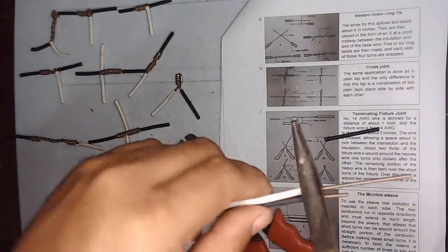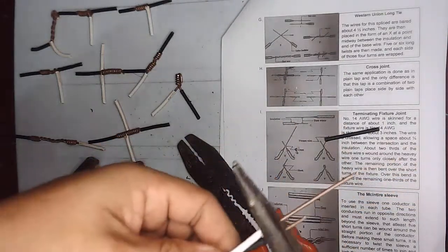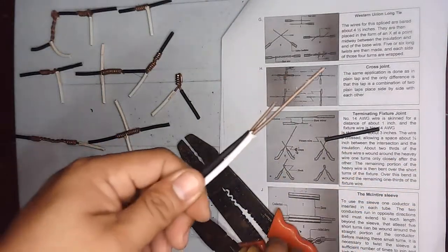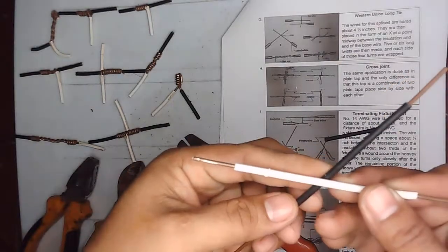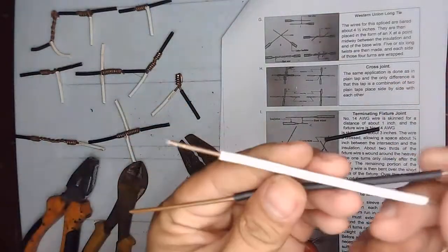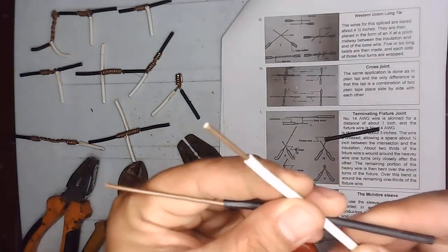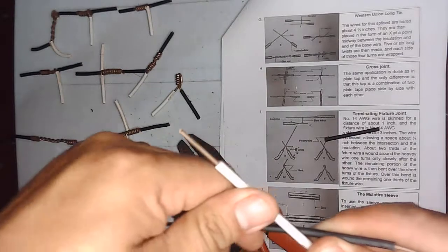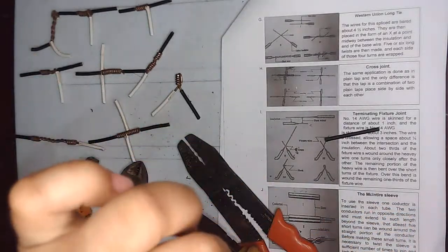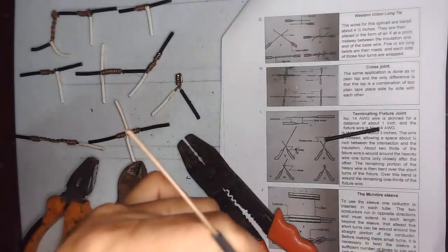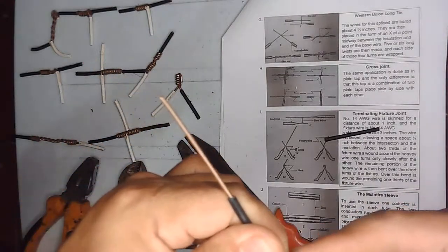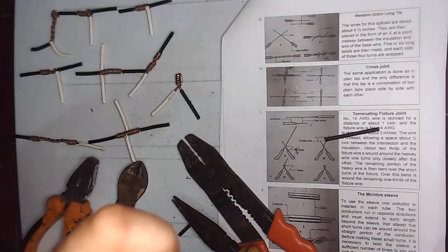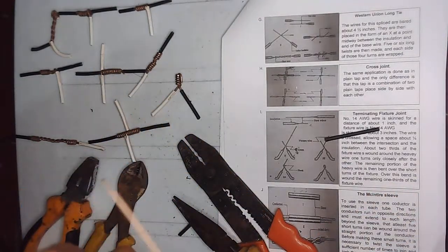What you're going to do is twist them together. You can start at the center or begin at the end. For me, I think it is quite easier if I'll start at the center, but make sure you evenly twist the wires. Okay.